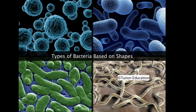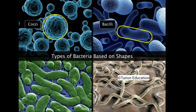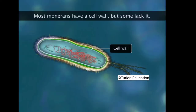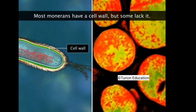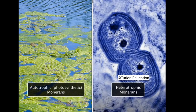Although simple in structure, monerans show great diversity. Based on their shape, bacteria are of four main types: cocci are spherical, bacilli are rod-like, vibrio are comma-shaped, and spirilla are spiral in shape. Most monerans possess a cell wall, while a few types such as mycoplasma do not. Some monerans are autotrophic and can synthesize their own food, while heterotrophic monerans derive nutrients from their environment.